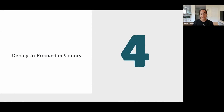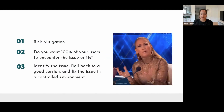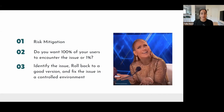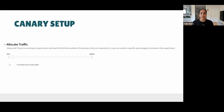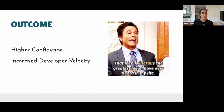The next step is to deploy to a production canary. Production canaries allow you to slowly roll out a change to a small subset of users before rolling it out to the entire population, minimizing impact if something goes wrong. If something goes wrong, would you want 100% of your users to encounter the issue, or just 1%? The setup is just a lever in the UI that you can drag to allocate a specific percentage of traffic. To summarize risk mitigation: before launch, use feature flags to target users; after launch, use production canaries to limit your audience.